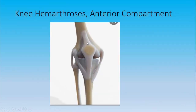Here is a demonstration of the anterior compartment of the knee. This is our quadriceps tendon, this is our kneecap or the patella, and then we have the patellar tendon here. Nicely demonstrated here are the lateral and medial collateral ligaments. The cruciate ligaments cannot be seen. You can have a collection here which is called the suprapatellar bursa collection.